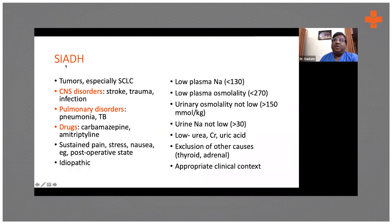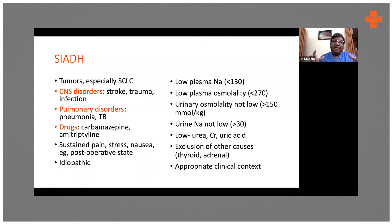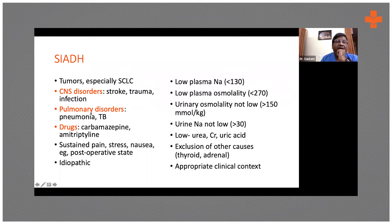Coming to SIADH — SIADH is when there is autonomous increased production of ADH hormone. To remember the causes of SIADH, there are three broad categories: anything wrong in the brain, anything wrong in the lungs, and the third category would be drugs. Just remember these three broad headings, and that would cover most of the conditions which would cause SIADH.